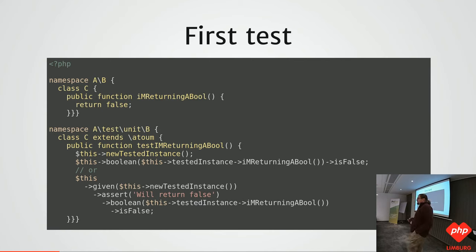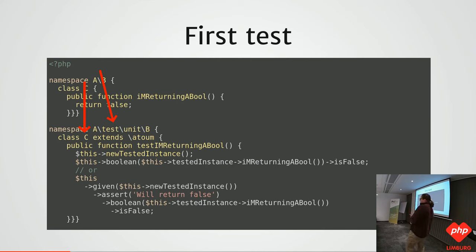The most important thing when using Atom is to have `tests` and `units` inside your namespace, because that's how Atom matches your unit test with your class. We remove those parts, and match the namespace A, B for one and class C for the other.